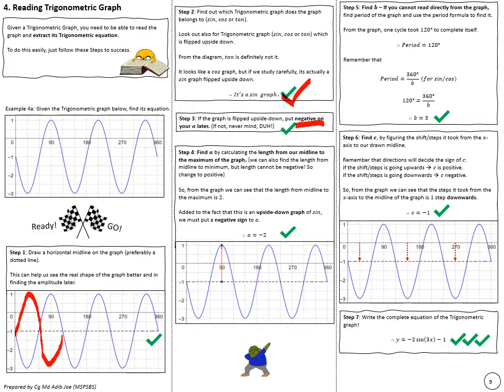Step three: if the graph is flipped upside down, you'll need to put a negative sign on a later. Step four: find a by measuring the length from the midline to the maximum point of the graph, which here is two. But since it's an upside-down graph you put a negative, so a equals minus two.